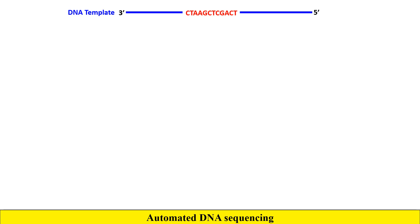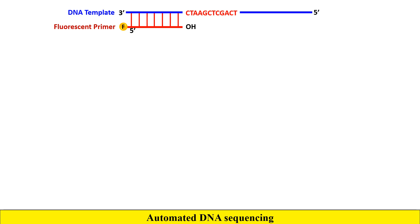In the first step, we add a fluorescent primer to the DNA template. Because we are going to synthesize a new DNA fragment, we require DNA polymerase, and DNA polymerase requires a primer for extension. That is why we use a primer here, and this primer is fluorescently labeled so that it can be automatically detected.